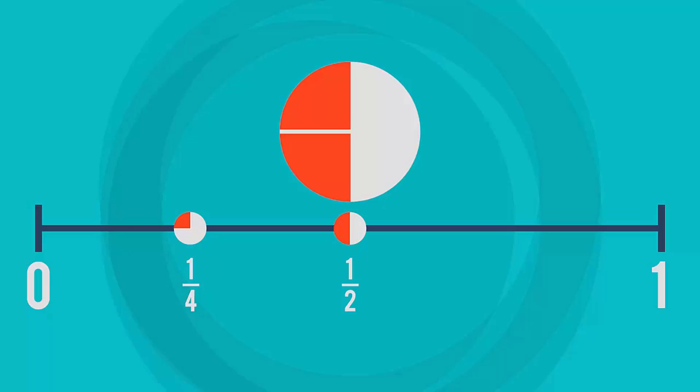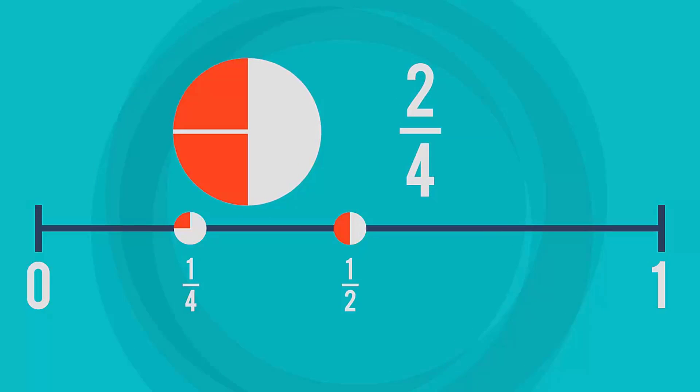How about this one? Two out of four equal parts. Hey, it looks like the same as the other fraction we just did. That's one half. Two fourths is equivalent to one half.